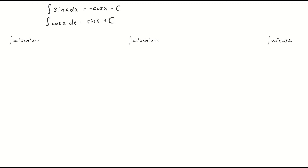Looking at the first problem, we have sine cubed x times cosine squared x dx. You see a product there, so you're thinking you'll probably have to use u-substitution. But if I let u equal cosine x, then du is equal to negative sine x dx, which means I can only substitute in for a sine x dx. I cannot substitute in for a sine cubed dx, so that cube throws me off.